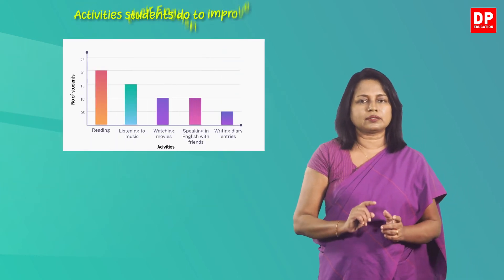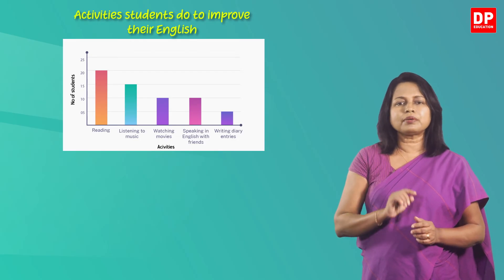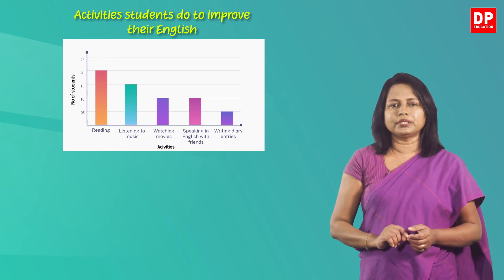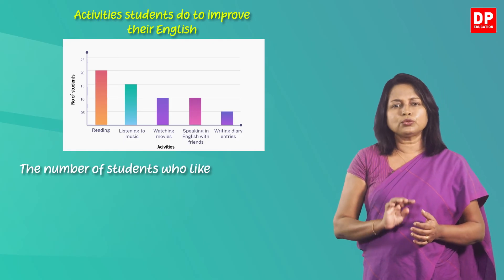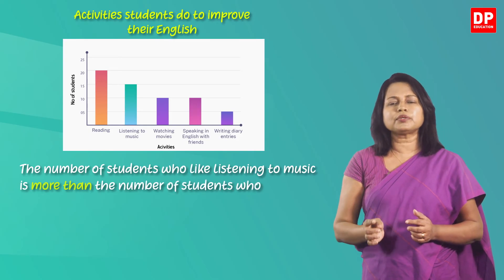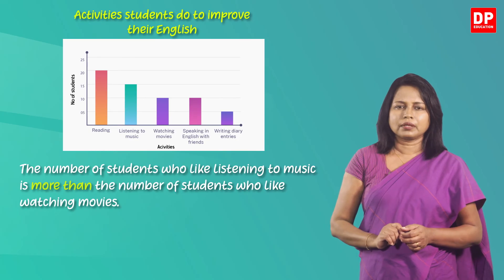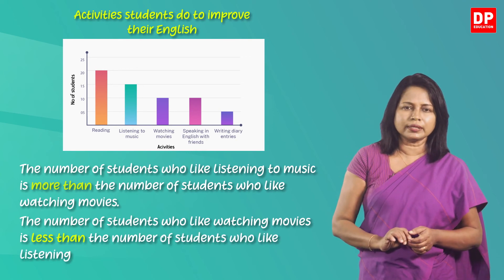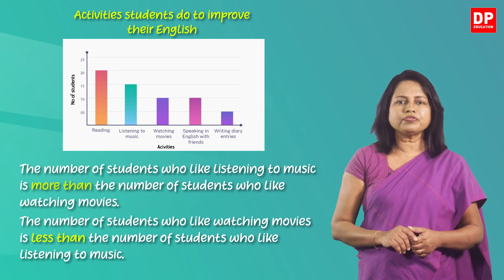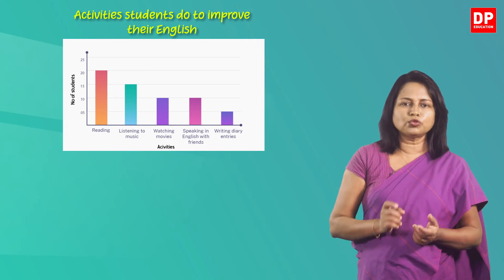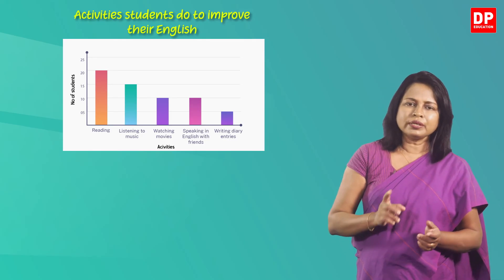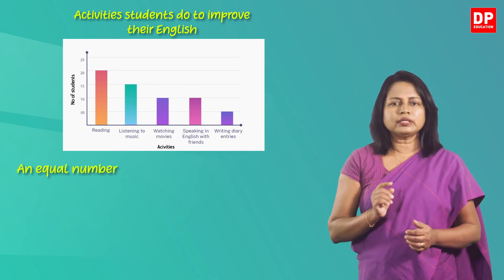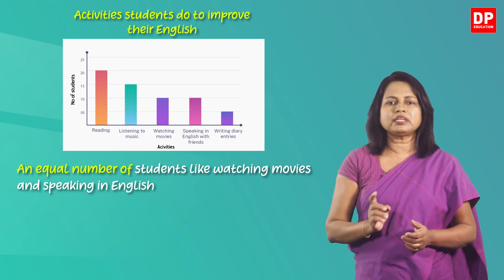Next you can compare two bars or two slices in a chart. Let's compare bars in this graph. Look at the two bars for listening to music and watching movies. 'The number of students who like listening to music is more than the number of students who like watching movies.' 'The number of students who like watching movies is less than the number of students who like listening to music.' There's one more phrase you have to learn. Look at the numbers for watching movies and speaking in English with friends — you have the same number of students. This is how you describe that: 'An equal number of students like watching movies and speaking in English with friends.'